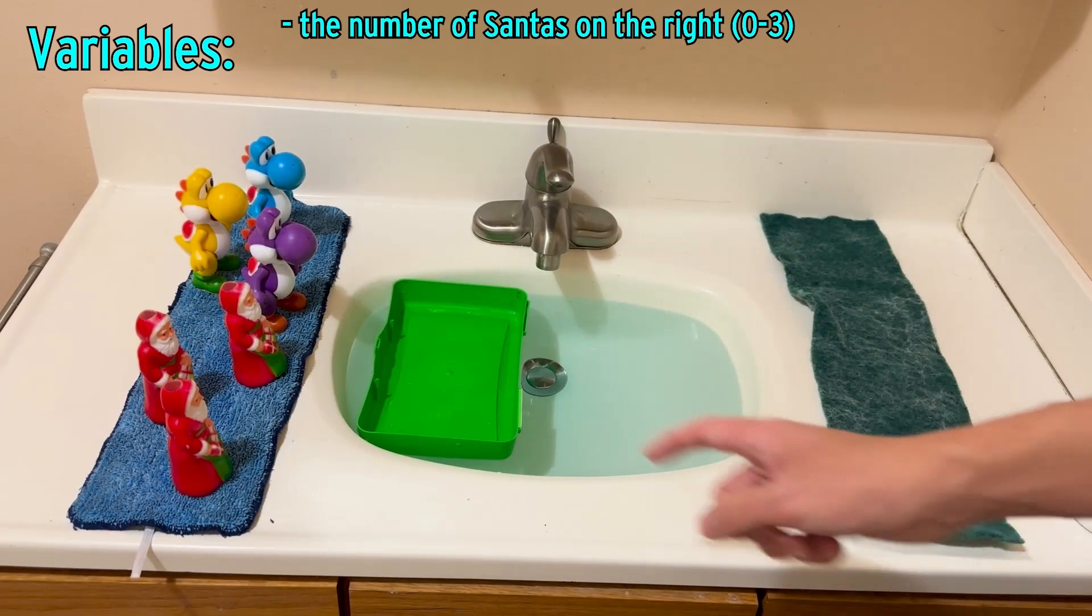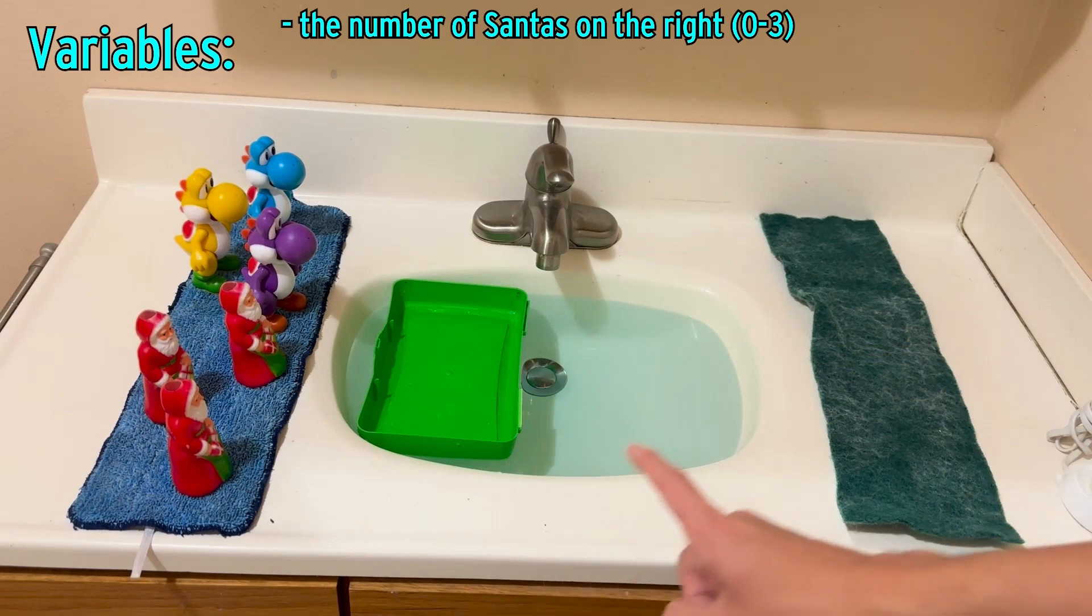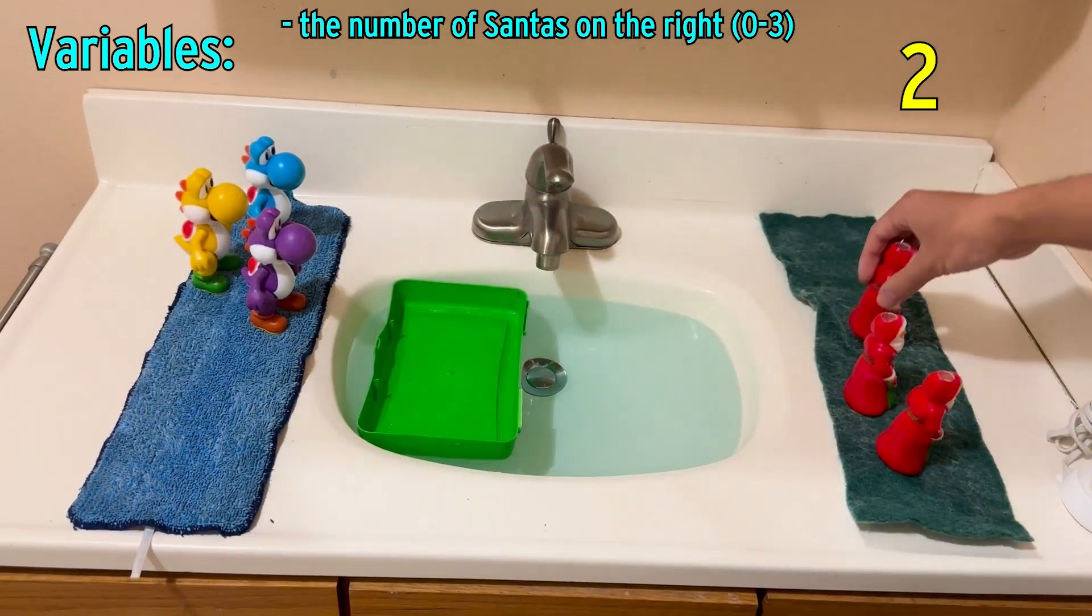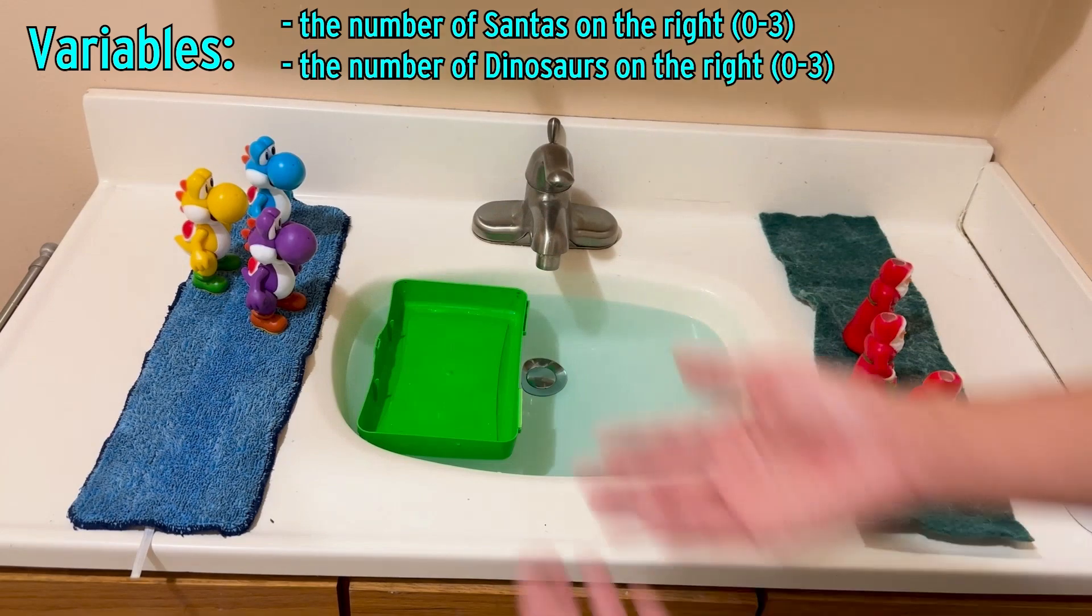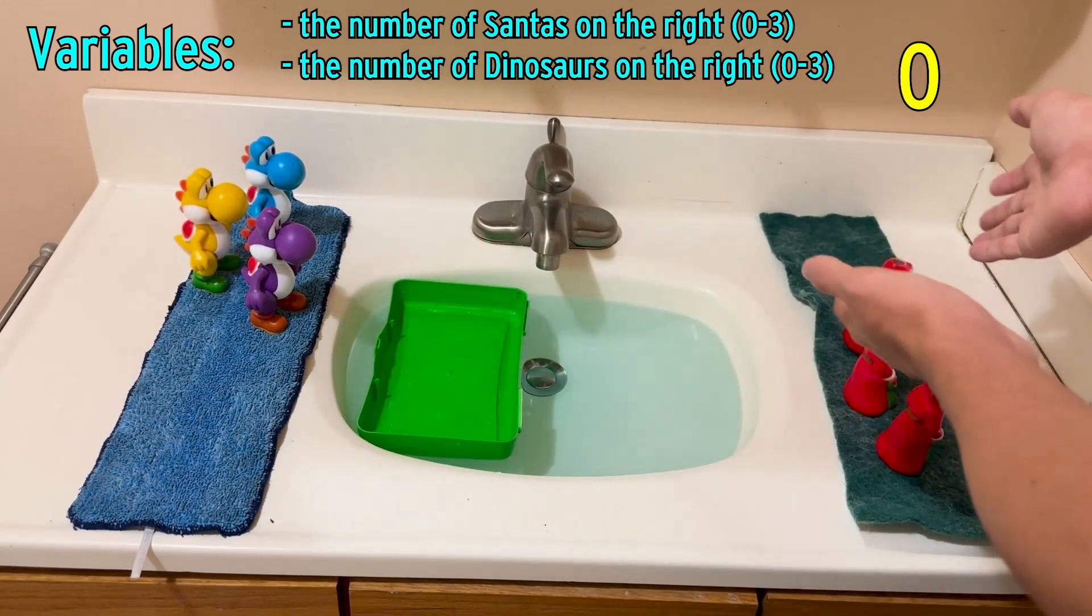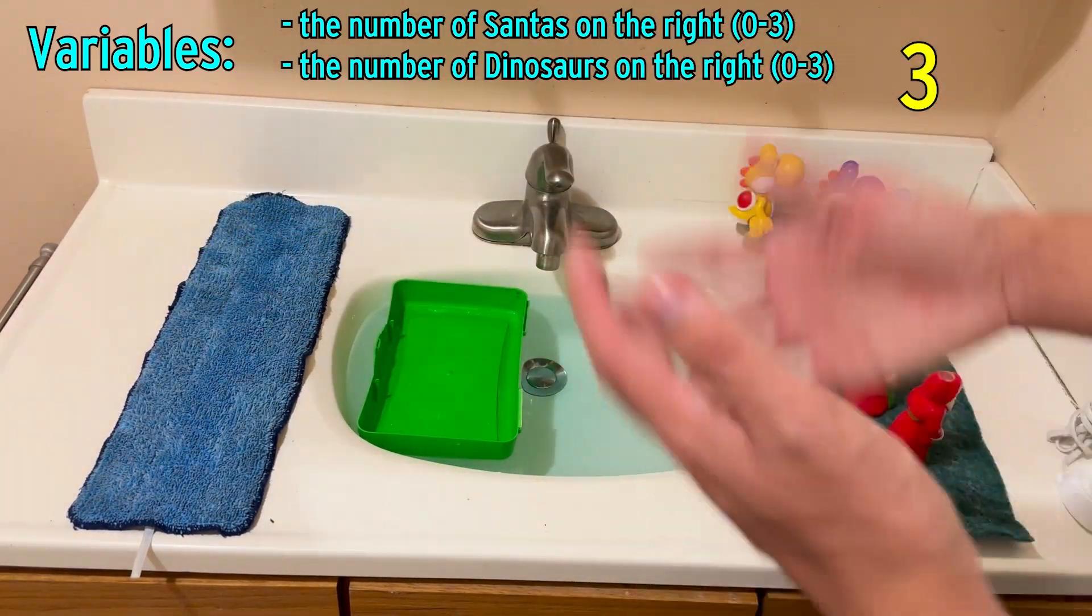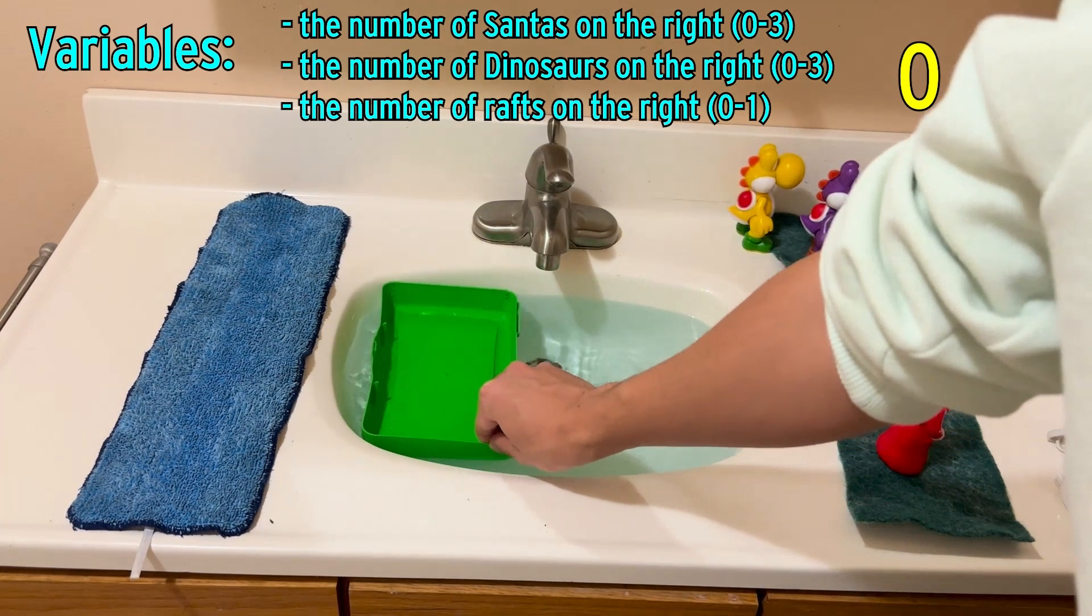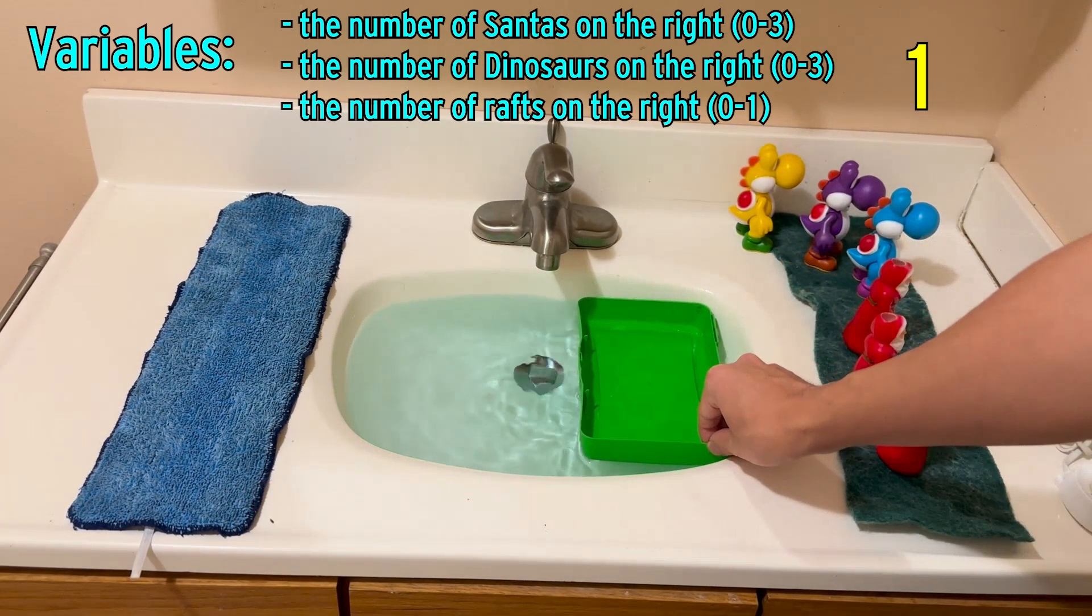The only relevant variables we need to keep track of are the number of Santas who have made it to the right side of the river, which can range from 0 to 3, as well as the number of dinosaurs who have made it to the right bank, and that's also 0 to 3. And finally, the number of rafts, which can only range from 0, it's on the left, to 1, it's on the right.